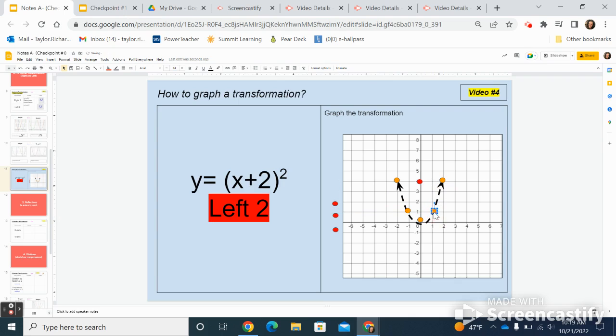Then my next orange point, I'm going to count left one, two. And if you notice it's hitting my other orange point, that's okay. They can overlap. I was looking for that final product. What does the whole graph look like when you move it left two?